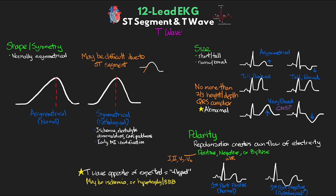That covers our quick review of the ST segment and T waves. We'll talk more about this in the next couple of lessons as we begin our discussion about ischemia and infarction. In the next lesson, we'll take a quick dive into various different patterns that may indicate or look like ischemia or infarction on first glance, but are actually related to other pathologies. And in the final lesson of this series, we'll look at actual ischemia and infarction and the ways we identify them on the 12-lead EKG.